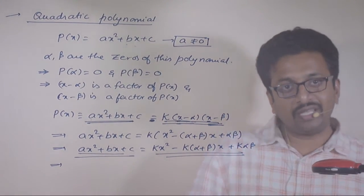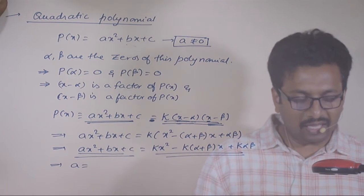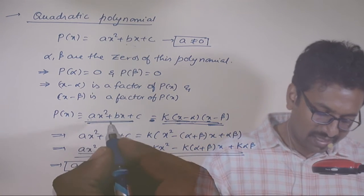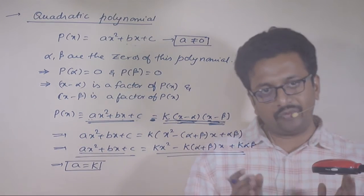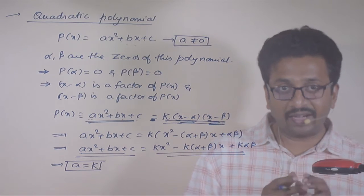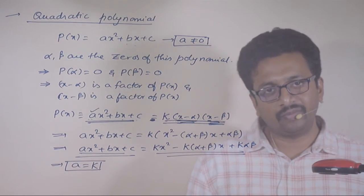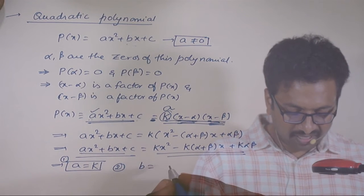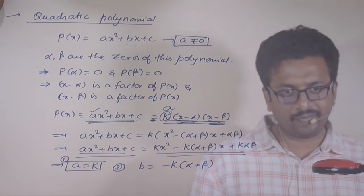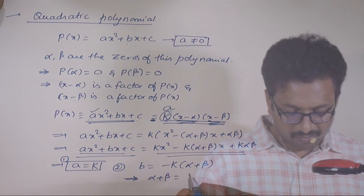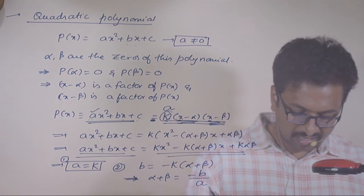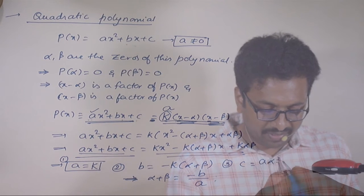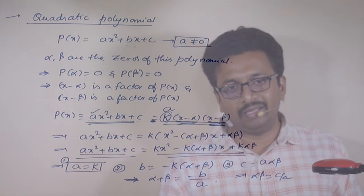So ax square plus bx plus c equals kx square minus k times alpha plus beta times x plus k times alpha beta. Now these two polynomials are exactly the same, so their coefficients must match. The coefficient of x square on the left is a, on the right is k, so k equals a. Now comparing the coefficient of x: b equals minus k times alpha plus beta, which gives alpha plus beta equals minus b by k, and since k equals a, alpha plus beta equals minus b by a. And for the constant term: c equals k times alpha beta, so alpha beta equals c by a.